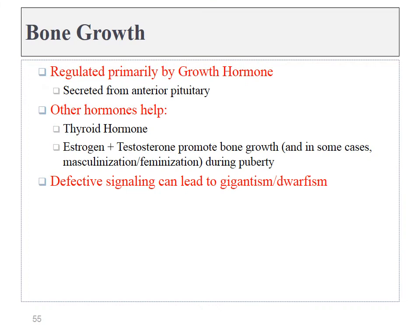The growth of bone tissue is primarily regulated by a hormone called growth hormone, secreted from the anterior pituitary. Other hormones can also induce bone growth, including thyroid hormone and estrogen and testosterone. The latter two not only promote bone growth but can change the way bones grow — for instance, they are responsible for differences in the shape of the hips and facial bones.